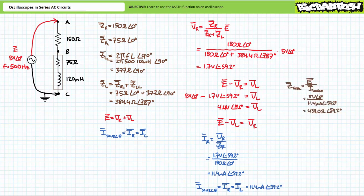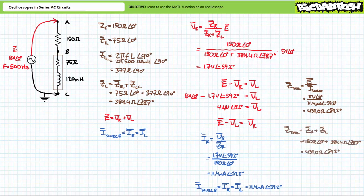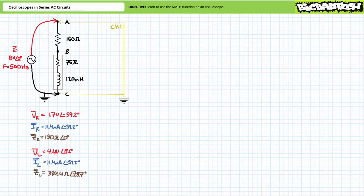As a means of checking our work, one can solve for total impedance using Ohm's law. Source voltage over source current yields a total impedance of 439 ohms at an angle of 59.2 degrees. The summation of ZR and ZL also yields 439 ohms at an angle of 59.2 degrees. With a reasonable degree of confidence our answers are correct, we move on to the practical portion and confirm these calculations using the oscilloscope.